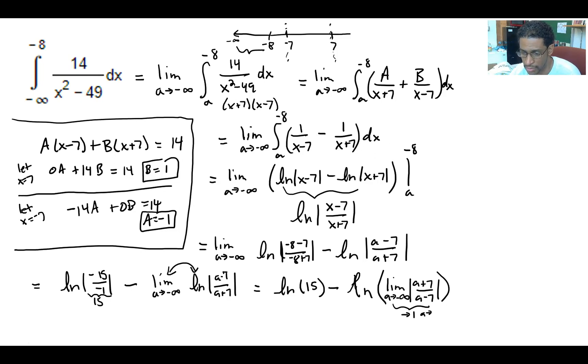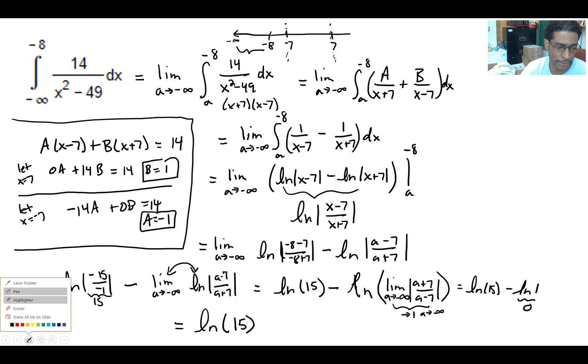And then we take the natural log of one, and so we have the natural log of 15 minus the natural log of one. But the natural log of one is zero, and so we get the answer of the natural log of 15. Okay, all right, great.